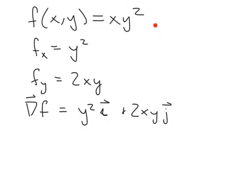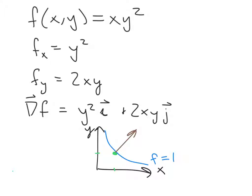So if we think about this function f(x, y) = xy², we can certainly take the partial derivative with respect to x, we can take the partial derivative with respect to y, and we can construct a gradient vector. We know that if we have a contour line of this function, the gradient vector is always going to be locally perpendicular to it. Since we're interested in a perpendicular vector to this curve at the point where x is 1, and thus y is 1, we need to substitute those numbers into the gradient vector, and when we do, we get a vector i + 2j.